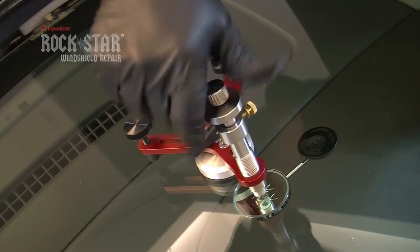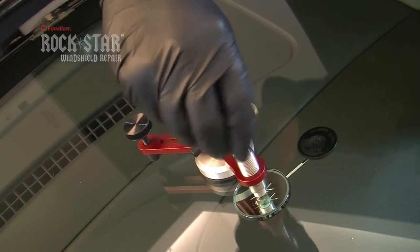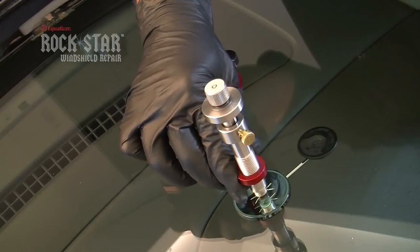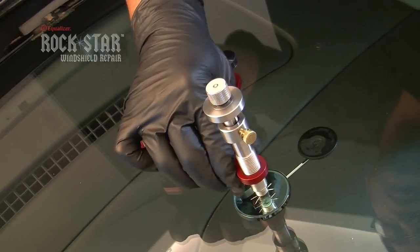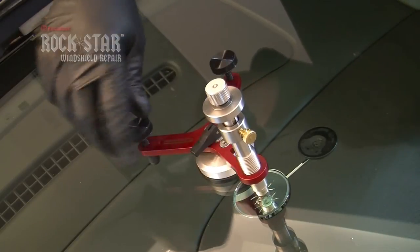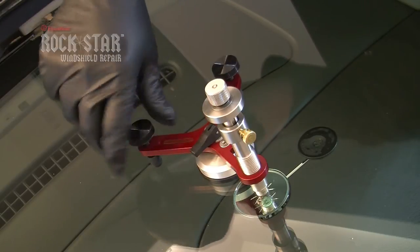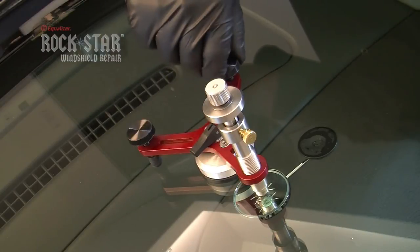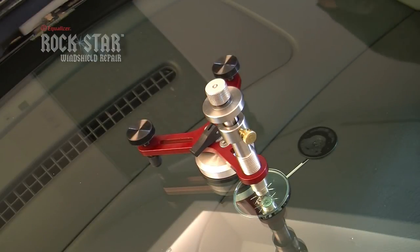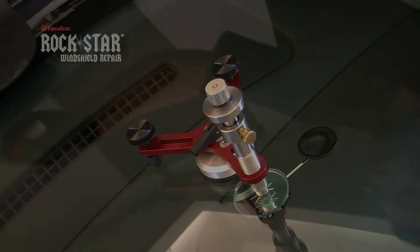Screw the injector assembly down until the o-ring makes contact with the surface of the glass. Secure the bridge adjusting screw down equally until the o-ring has a flat look to its appearance. This will ensure that the o-ring is snug enough to create an airtight seal. Always make sure not to over tighten the injector assembly or the bridge adjusting screws. This could cause further damage to the break.